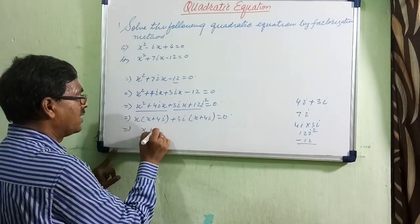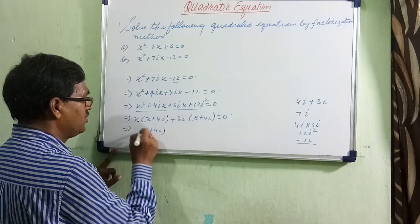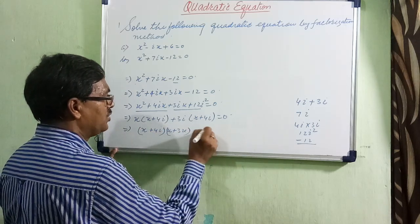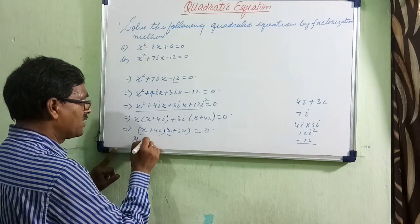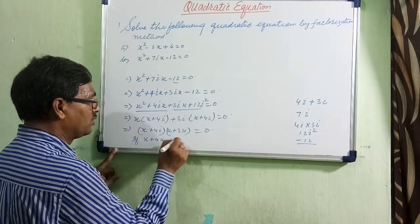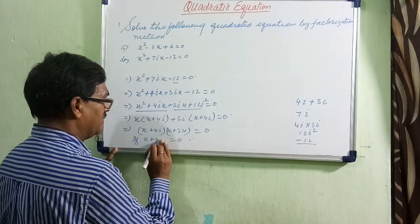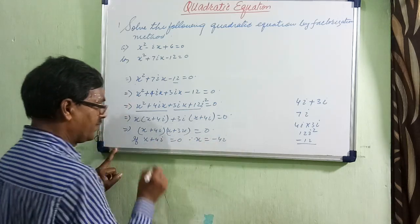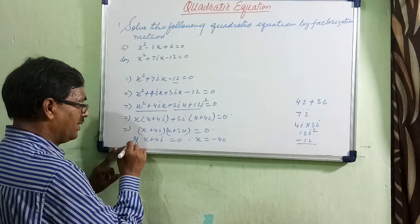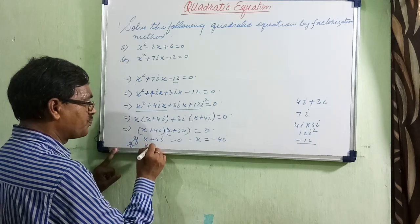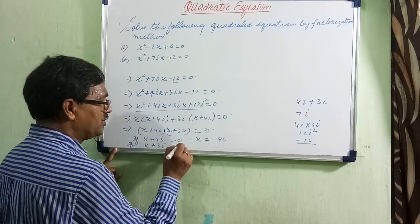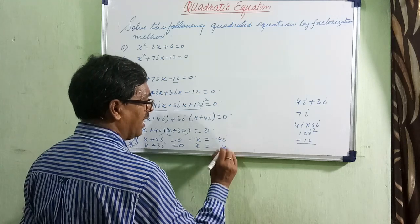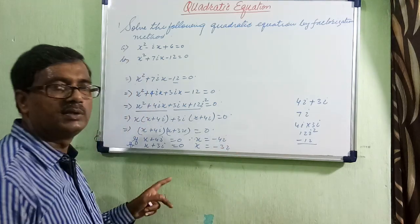Take plus 3i common from the remaining terms, leaving x plus 4i, so we have x plus 4i into x plus 3i equals 0. If x plus 4i equals 0, then x equals minus 4i. If x plus 3i equals 0, then x equals minus 3i. This is the solution of this equation.